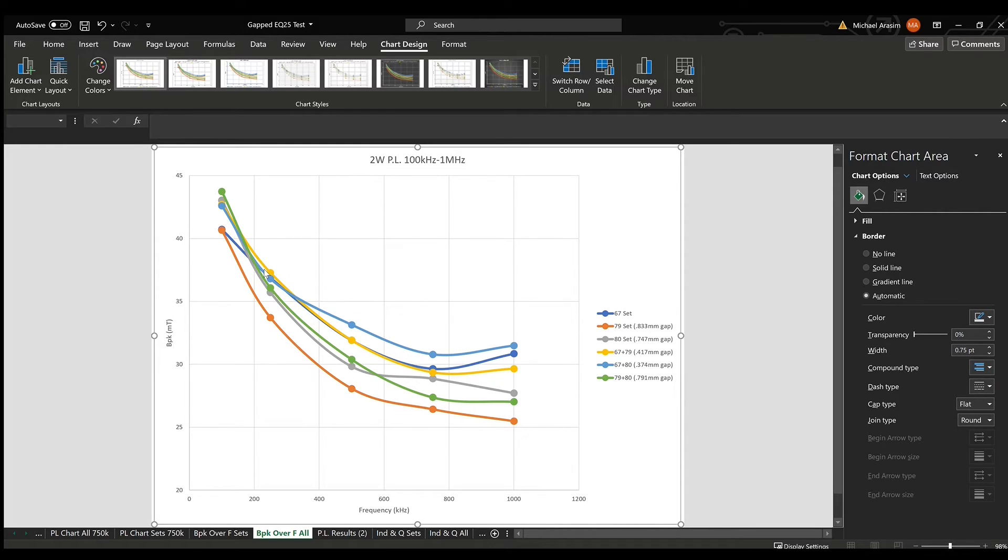And then as we push frequencies up a little bit further, we'll see that the 67 and 79 combo is more or less mirroring the 67 material set performance. But what's pulling out ahead is our 67 and 80 material combination. And out to a megahertz, that's actually giving us the highest flux density for a given power loss level. So interestingly enough, it seems like having a combination of cores together is beneficial, at least from this one metric.